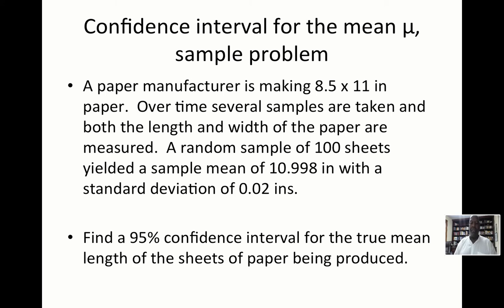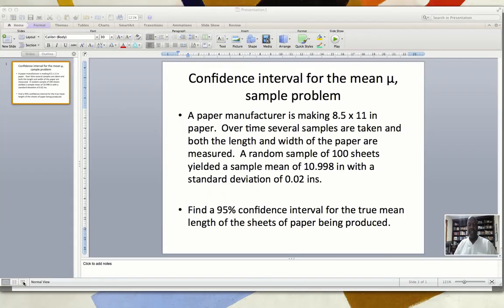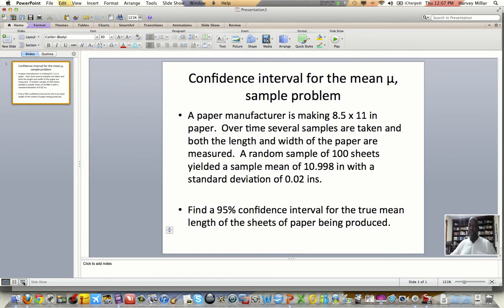We want to find a 95% confidence interval for the true mean length of the sheets of paper being produced. We know that the target length should be 11 inches, which should be the population mean, but the process varies. So we have a sample mean, a sample standard deviation, and a sample size. I'm going to switch screens to the tablet to work this problem.